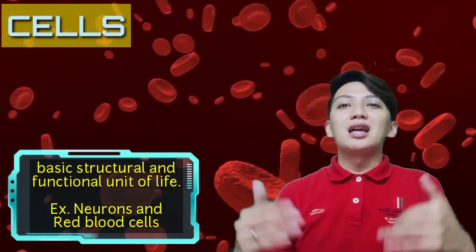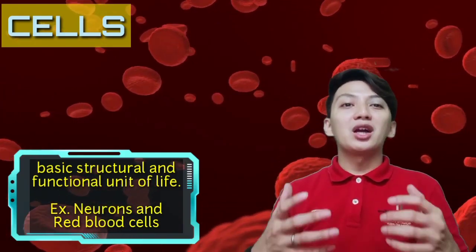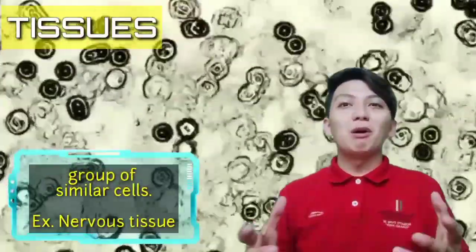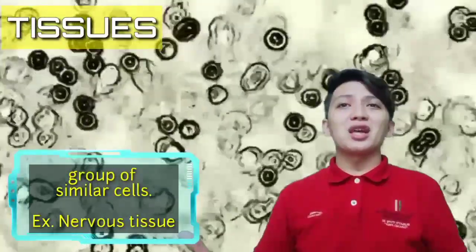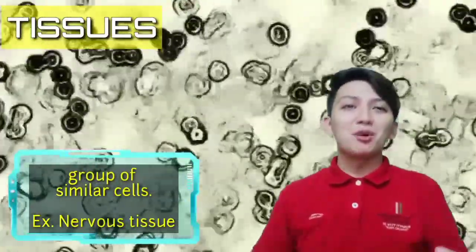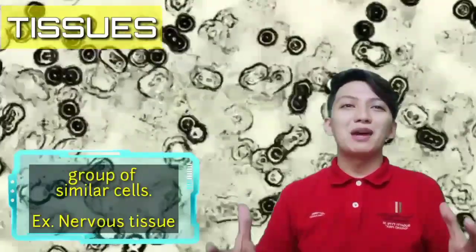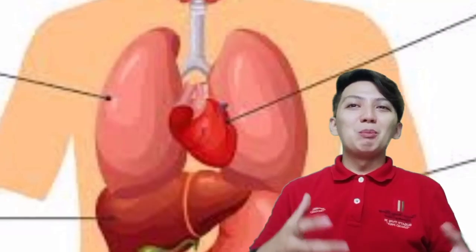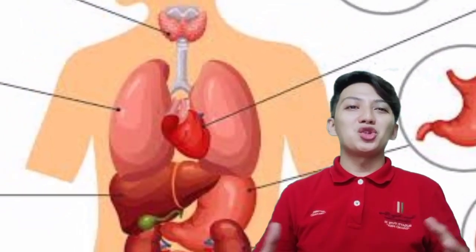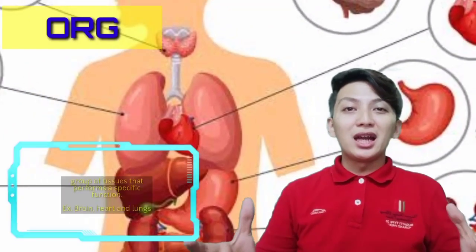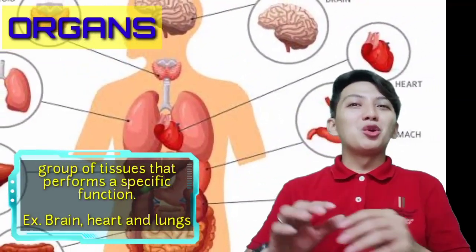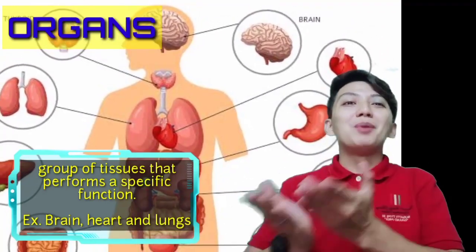When cells are grouped together, number five, we have what we call tissues. Tissues are a group of cells, and this group of cells has its own function. For example, we have nervous tissue that can be found in the brain. Then groups of tissues can compose an organ. For example, a group of nervous tissue performs a specific form — the brain.